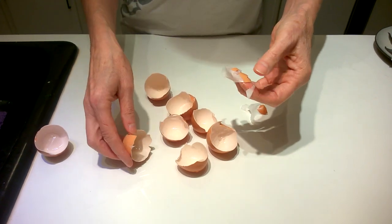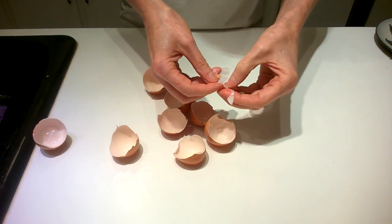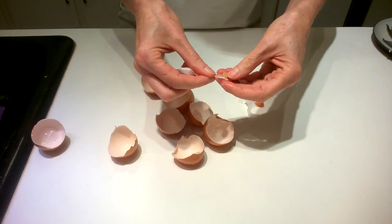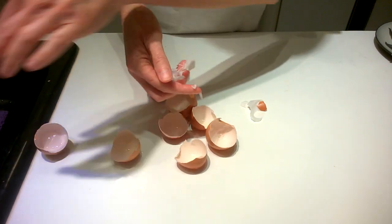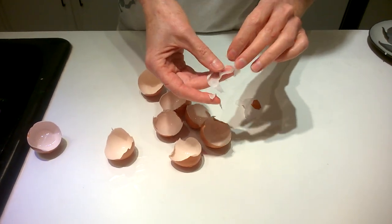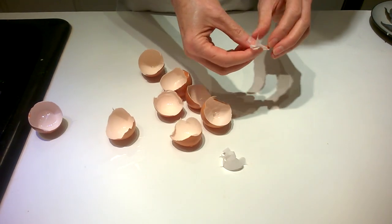I just rinse them out first and then pull whatever's left of the eggshell off of it, because my dogs don't particularly like those. But there's the membranes.